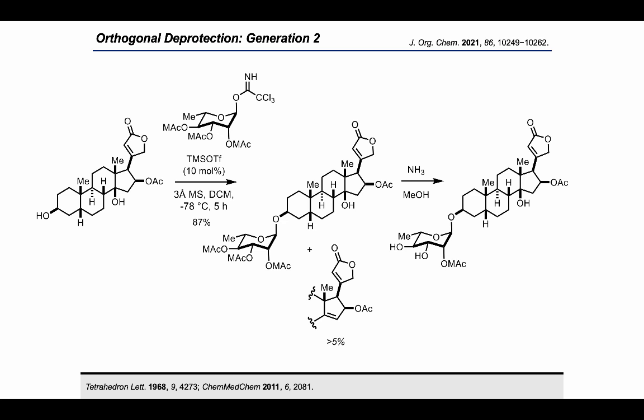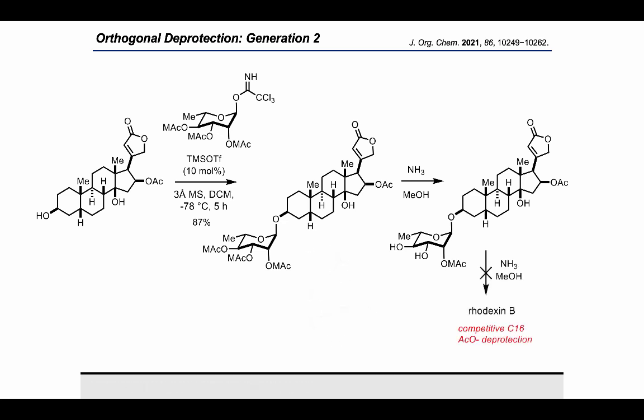...still containing one MAC protection group at the 2' position of the L-rhamnose moiety. Further exposure to ammonium in ethanol led to competitive cleavage of the beta-C16 acetate and subsequent degradation of the butenolide, and did not result in radexin B as the final product. Similarly, exposure of the intermediate to ytterbium triflate in methanol — conditions previously utilized to cleave MAC groups — resulted in cleavage of the glycoside linkage and accompanying beta-C14 hydroxide elimination.